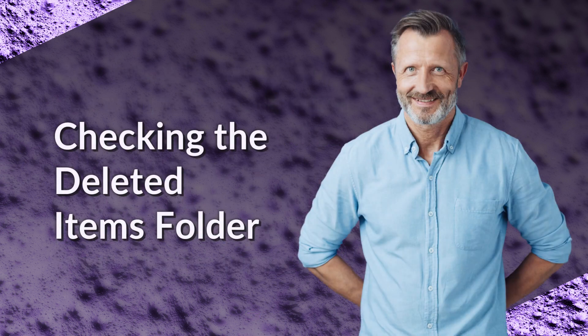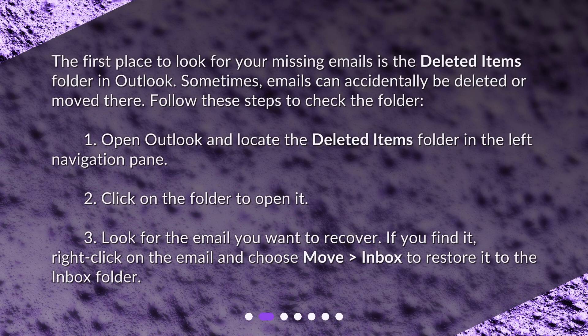Checking the Deleted Items folder. The first place to look for your missing emails is the Deleted Items folder in Outlook. Sometimes emails can accidentally be deleted or moved there. Follow these steps to check the folder. 1. Open Outlook and locate the Deleted Items folder in the left navigation pane.